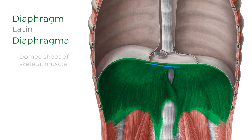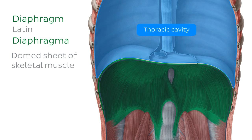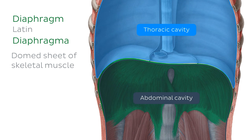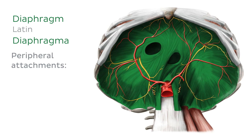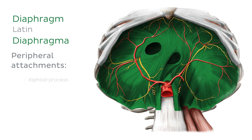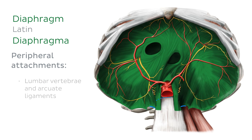The diaphragm is a domed sheet of skeletal muscle that resides in the trunk of the body and separates the thoracic cavity from the abdominal cavity. Looking from an inferior perspective, we can see it has three peripheral attachments, which are the xiphoid process anteriorly, the costal cartilages of ribs 7 to 10, as well as ribs 11 and 12 laterally, and the lumbar vertebrae and arcuate ligaments posteriorly.